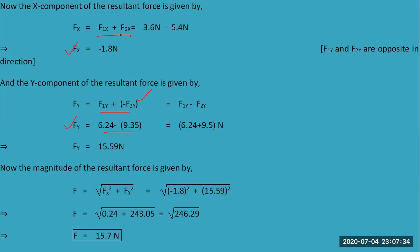After putting in the values of F1y and F2y for the vertical components and adding F1x and F2x for the horizontal components, we get Fx and Fy. Taking the magnitude — the square root of Fx² + Fy² — with the Fx component and Fy component equal to 15.19, we calculate the magnitude of the resultant force, which comes out to F = 15.7 newtons.